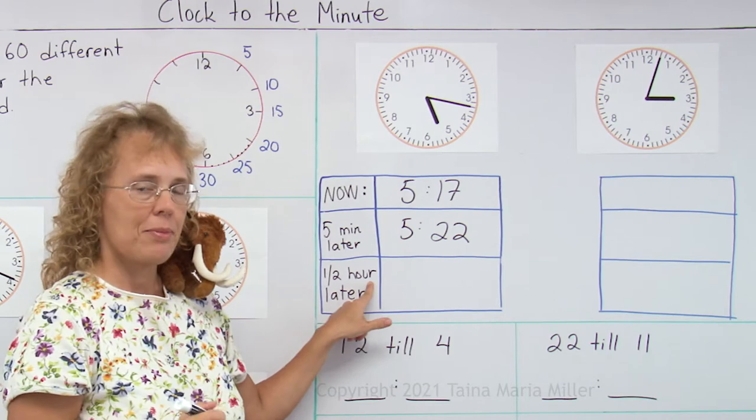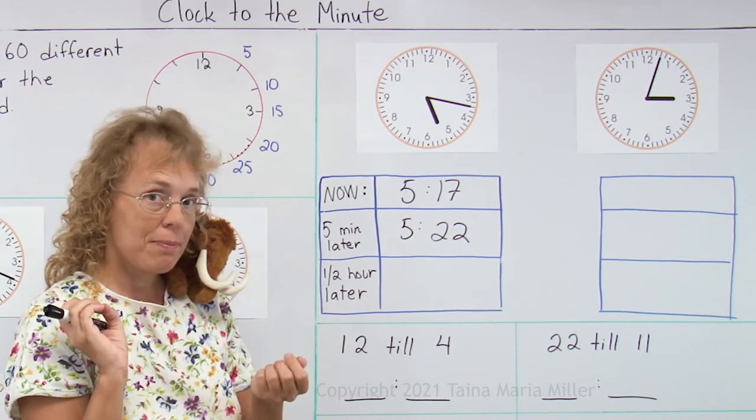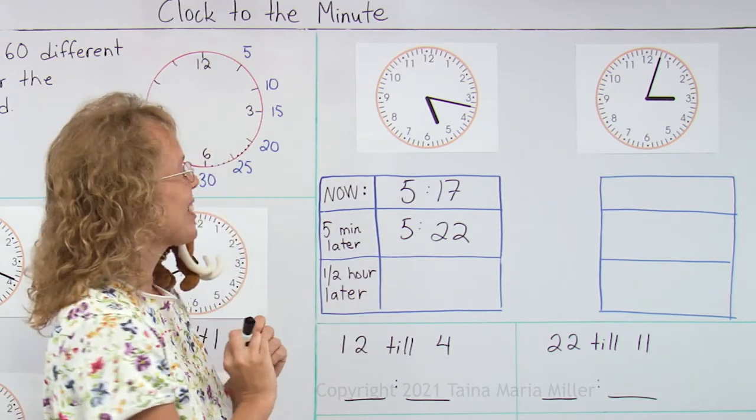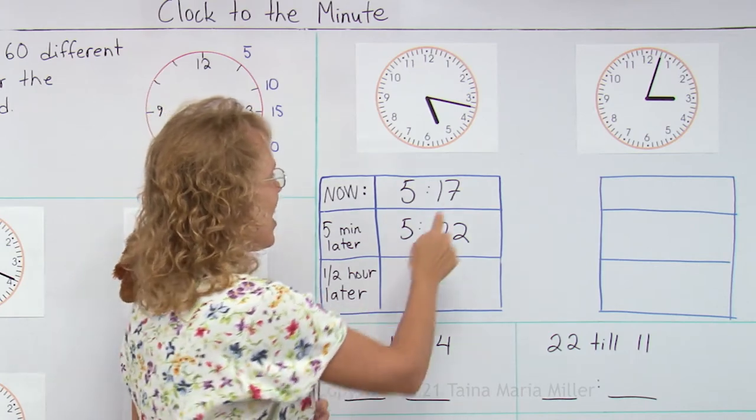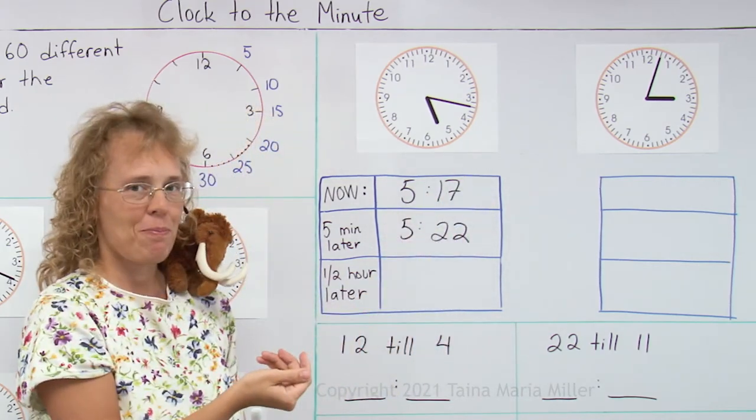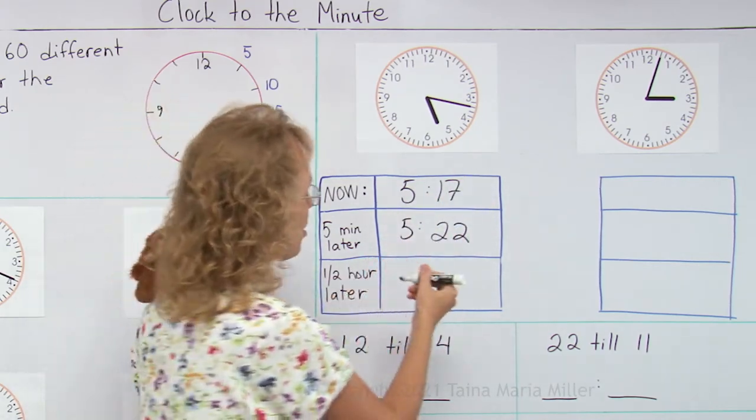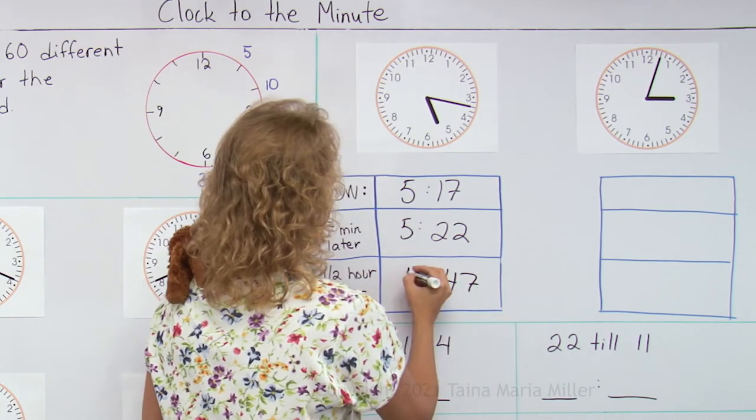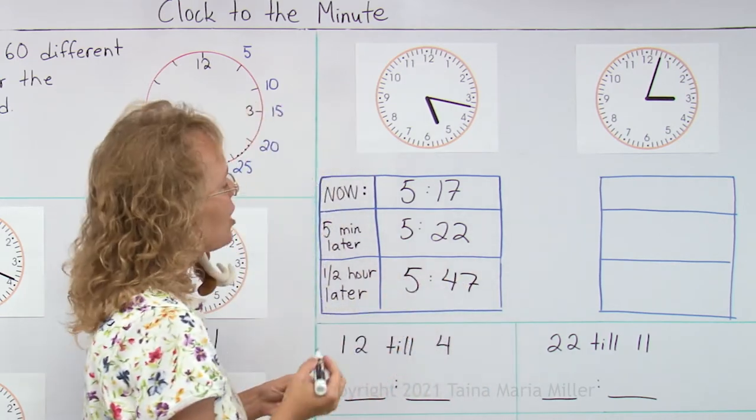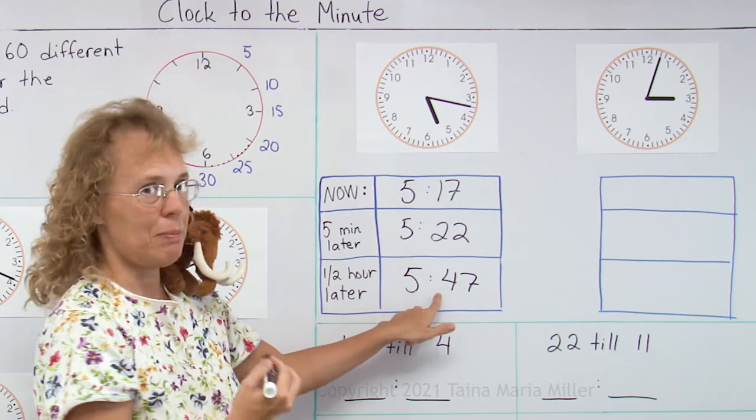Half an hour later, now half an hour means how many minutes? Yeah, 30 minutes. So you take 30 and add 17 and 30. 30 plus 17 is 47. And the hour does not change, since we didn't go more than 60.